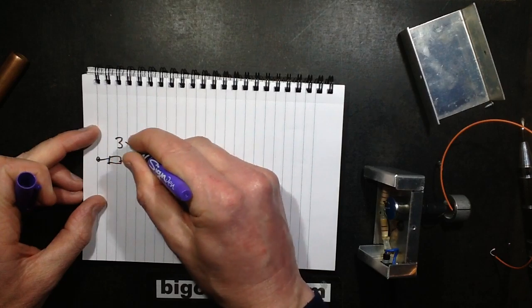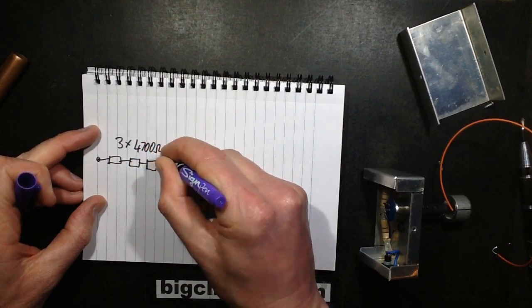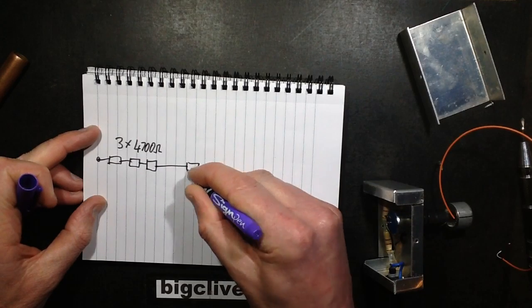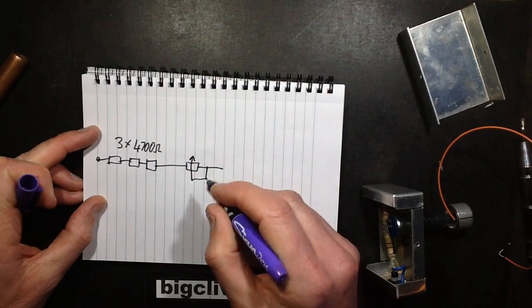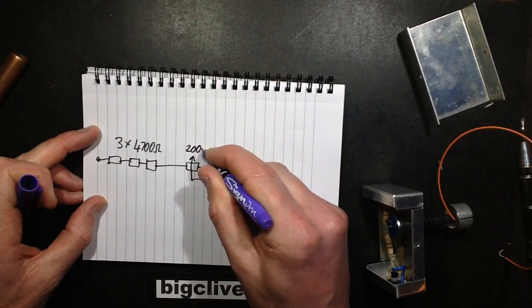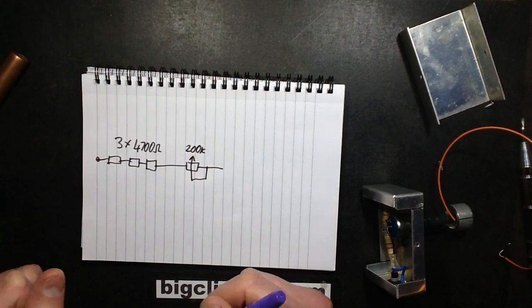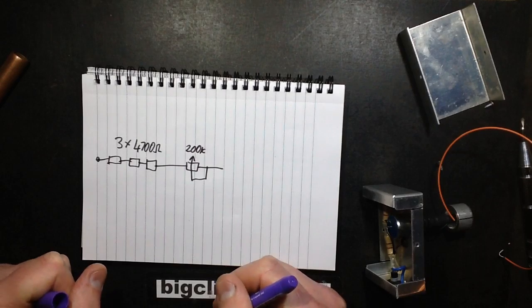The three resistors are 4700 ohm, and the potentiometer... I don't recommend making one of these, by the way. It's extremely dangerous, particularly if you make a mistake with component choices. It will probably result in death.